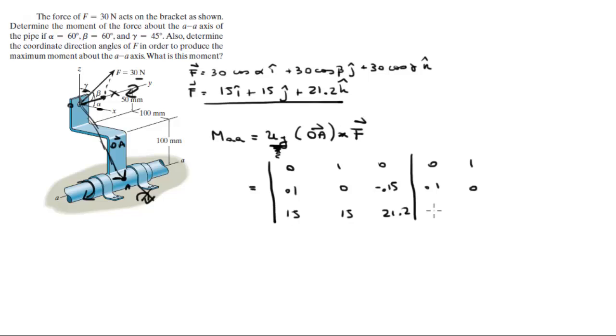0.1, 0, 15, 15. You do your positive diagonals. First one's 0, second one is 1 times -0.15 times 15 comes out to be -2.25. Negative diagonals: 0, 0, and the last one is 21.2 times 0.1 times 1, which is -2.12. So this moment comes out to be 4.37.